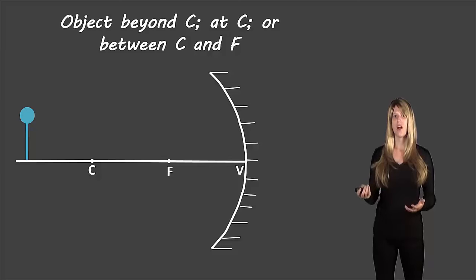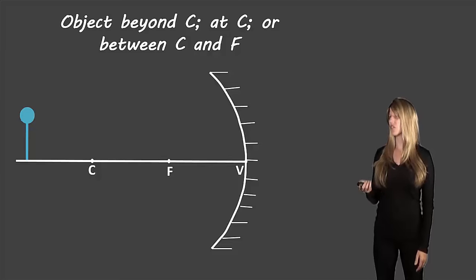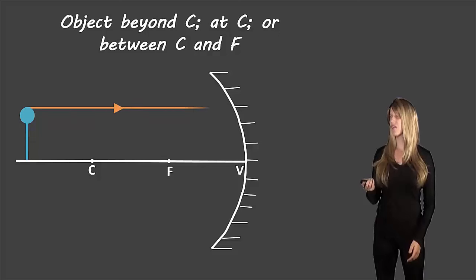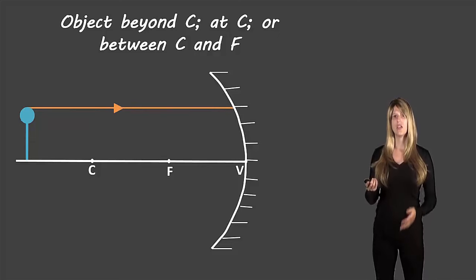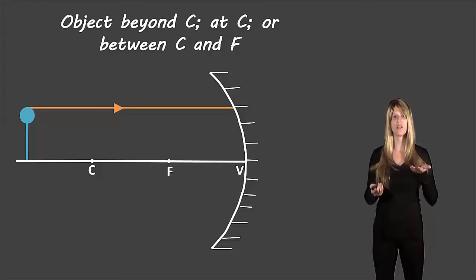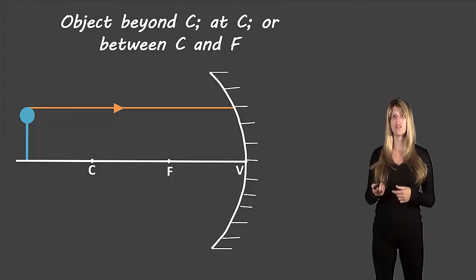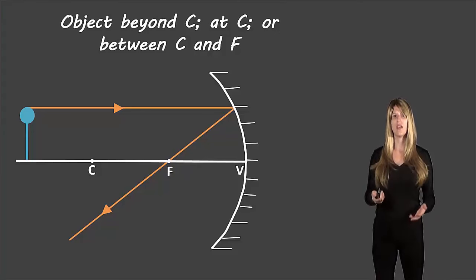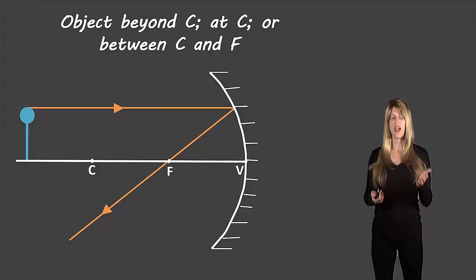Here we have our original object — a blue balloon — and we're going to figure out how the image looks from this original object. Our first rule is that if we have an incident ray that's parallel to the principal axis — that imaginary line along the midpoint of the mirror — it will reflect through the focus. That was actually one of the rules about the definition of focus.